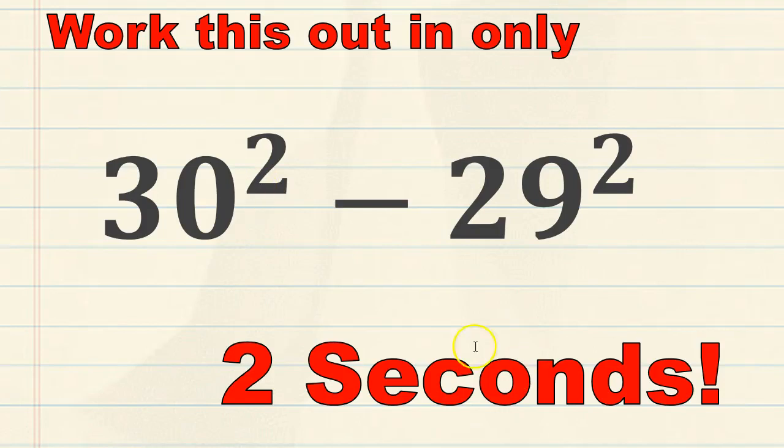Alright, we're going to work this out in only two seconds. 30 squared minus 29 squared is going to equal 59.